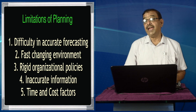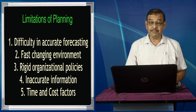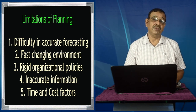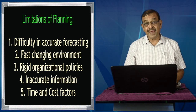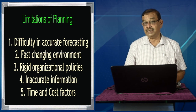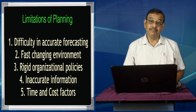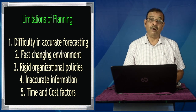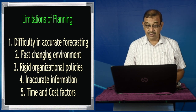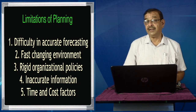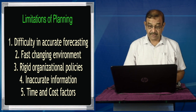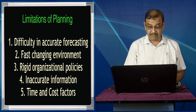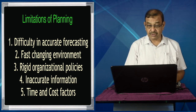The fifth limitation is time and cost factor. Without planning we cannot move ahead, but in order to plan effectively we have to invest time and spend money on the development of planning premises and planning processes. So planning involves a high amount of cost as well as time. These are the limitations of planning: difficulty in accurate forecasting, fast changing environment, rigid organizational policies, inaccurate information, and time and cost factors.